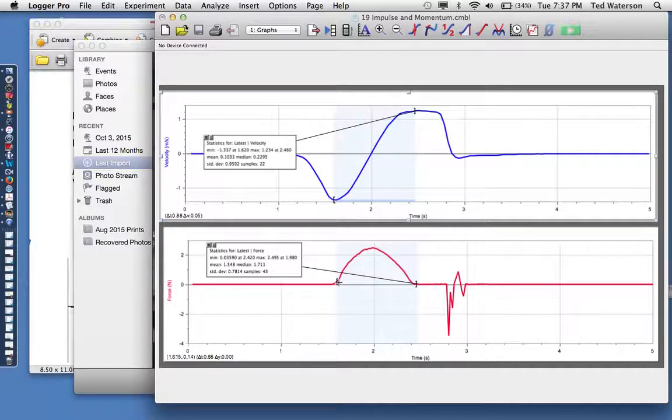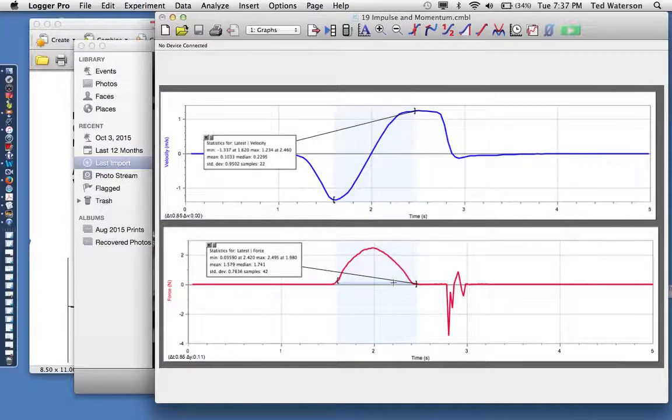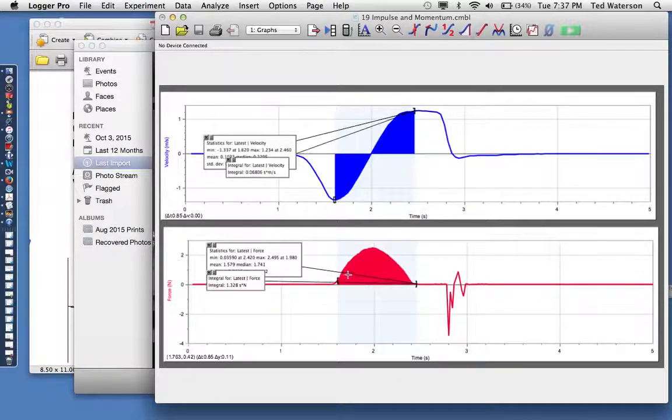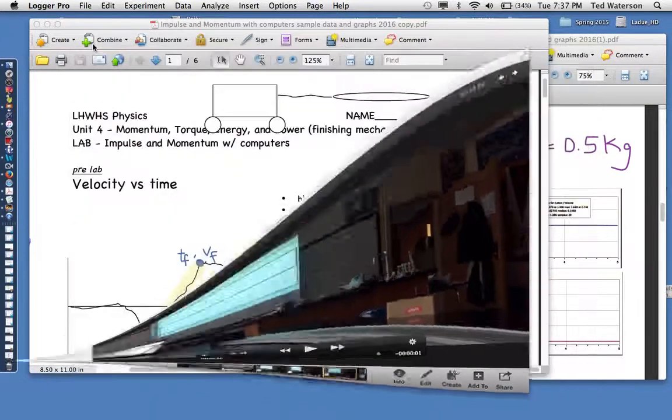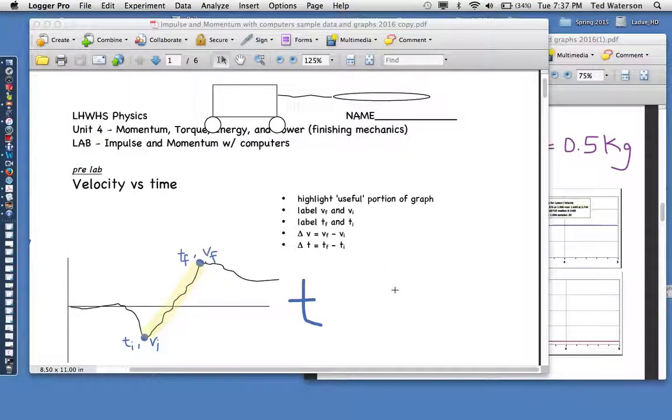Another thing we could do, and that's coming down here to that force graph, is find the area. And when we found the area on this force graph, it would multiply force and time, and we would get newtons per second on that. So let's take a look and kind of see what these graphs looked like and how that allowed us to kind of fill in the lab sheet.